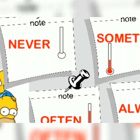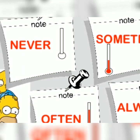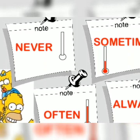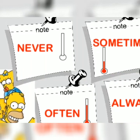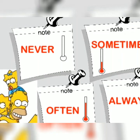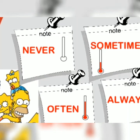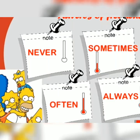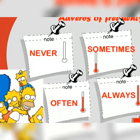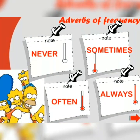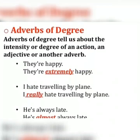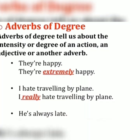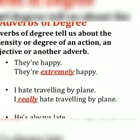Adverb of frequency answers the question how often the work has been done — whether it has been done for some time or for a long time. Words like never, sometimes, often, and always are adverbs of frequency.